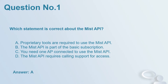Question number 1: Which statement is correct about the MIST-AI? A. Proprietary tools are required to use the MIST API. B. The MIST-AI is part of the Basic Subscription. C. You need one AP connected to use the MIST-AI. D. The MIST-AI requires calling support for access. Answer: A.